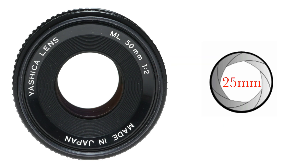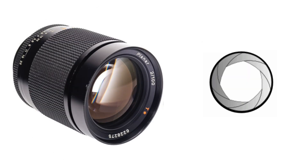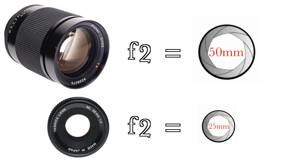A 50mm f2 lens has an aperture opening of 25mm, while a 100mm f2 lens has an aperture opening of 50mm. As you can see, despite both lenses having an f2 aperture, the apertures are not the same.